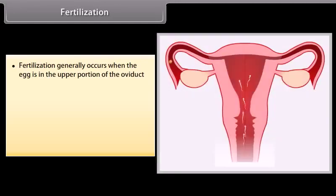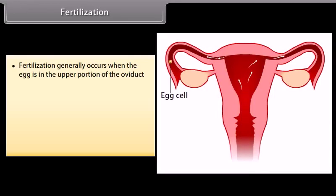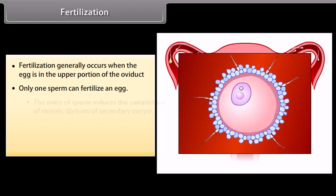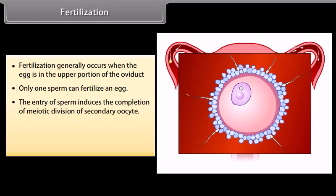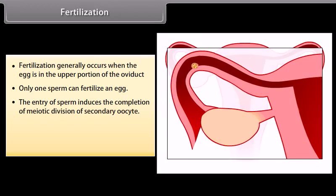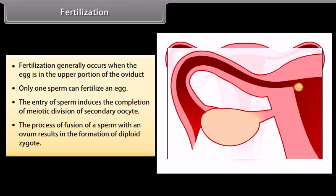Fertilization generally occurs when the egg is in the upper portion of the oviduct. Only one sperm can fertilize an egg. The entry of sperm induces the completion of the meiotic division of the secondary oocyte. The process of fusion of a sperm with an ovum results in the formation of a diploid zygote.